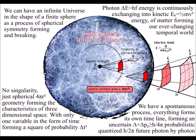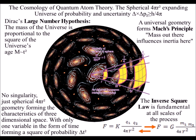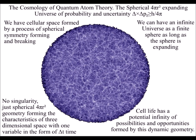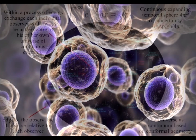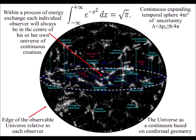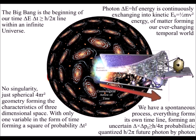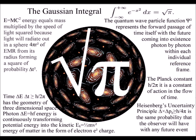In this theory, we have the same geometrical process at the large scale in the form of plasma that we have at the small scale and low temperature relative to the atoms. We can see this with the organization of charge relative to the membrane of each living cell. The universe is a light sphere of probability with no singularity — just spherical geometry forming the characteristics of three-dimensional space, with only one variable in the form of time.